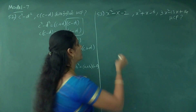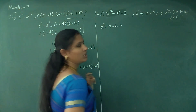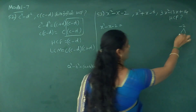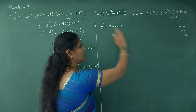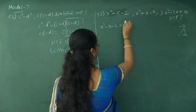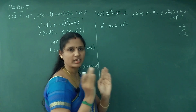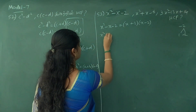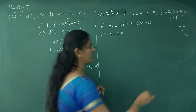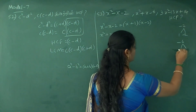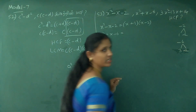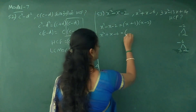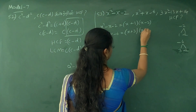First equation: x squared minus x minus 2. Minus 2 is equal to minus 2. Now we put 1 and 2. The factorization gives x plus 1 into x minus 2. Now let's look at x squared plus x minus 6: minus 6, and the factors give x plus 3 into x minus 2.